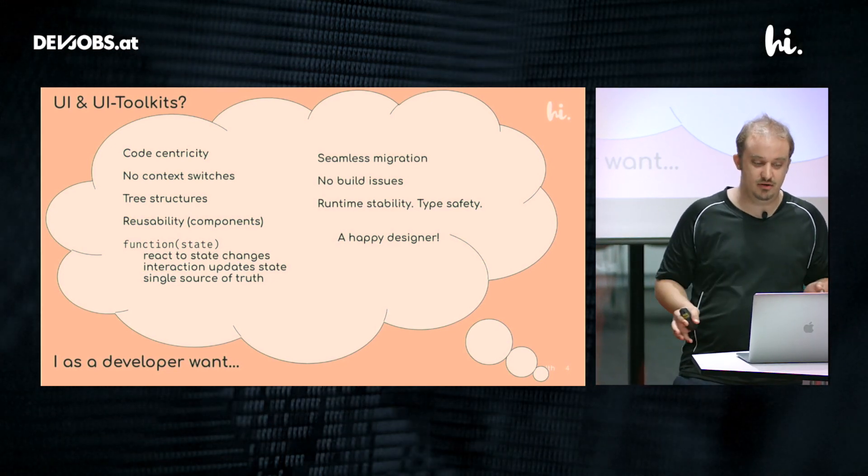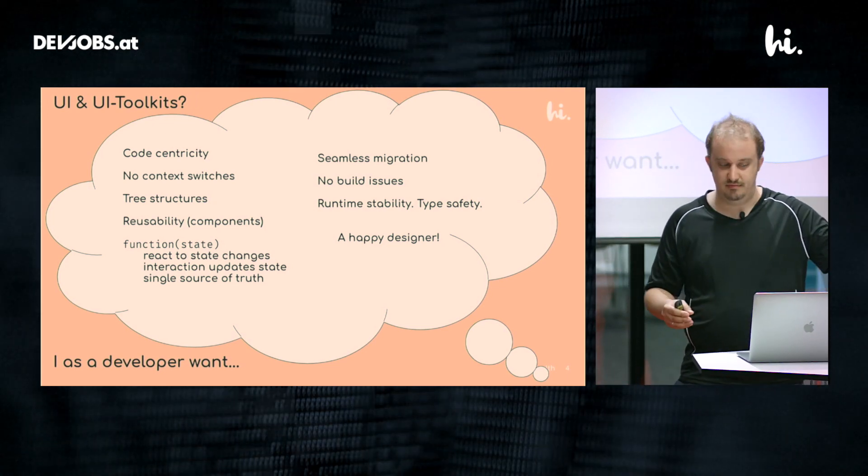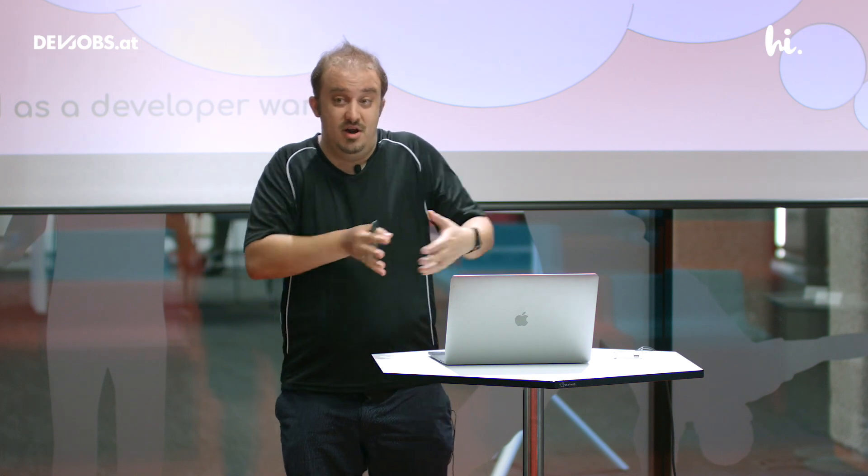I did some brainstorming on what I want from UI and a UI toolkit from a developer perspective. Code centricity — I don't like context switches. I like tree structures as a data structure, and when I have something I want to reuse it. I want UI to be a function of state: on state update in my model the UI should update, and when someone interacts with the UI my state should update — and this state should be a single source of truth, not multiple states that need to be synchronized.